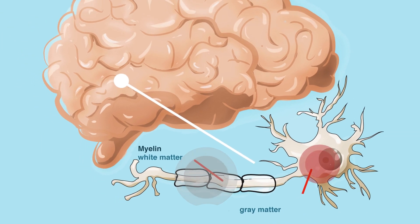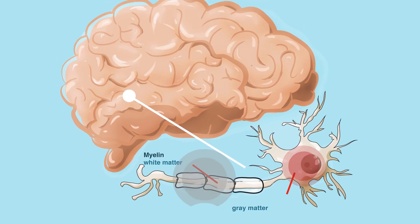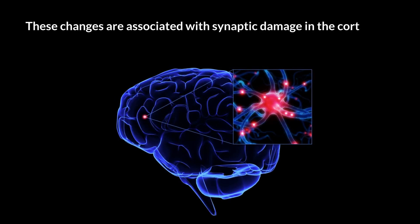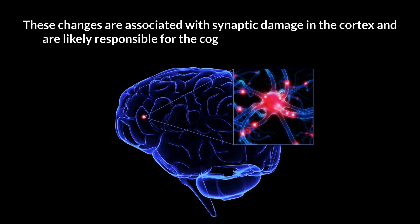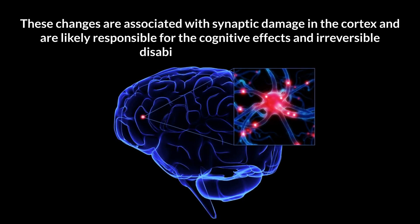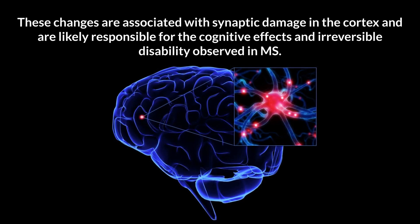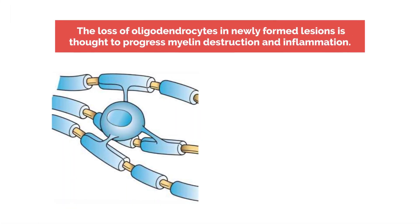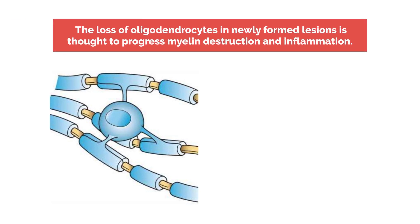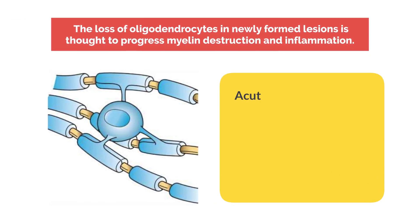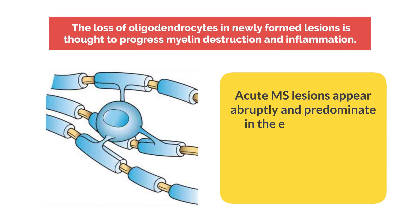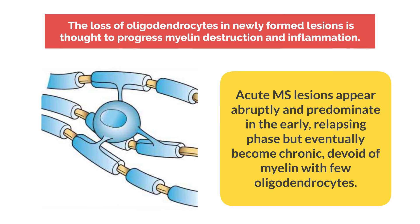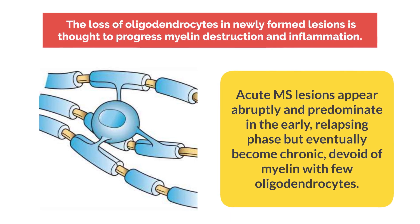Gray matter lesions also occur and become more prominent over time. These changes are associated with synaptic damage in the cortex, and are likely responsible for the cognitive effects and irreversible disability observed in MS. The loss of oligodendrocytes in newly formed lesions is thought to progress myelin destruction and inflammation. Acute MS lesions appear abruptly and predominate in the early relapsing phase, but eventually become chronic, devoid of myelin with few oligodendrocytes.